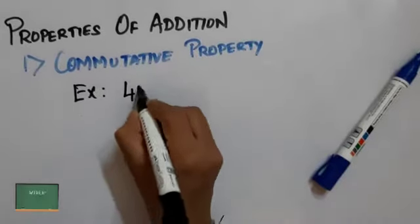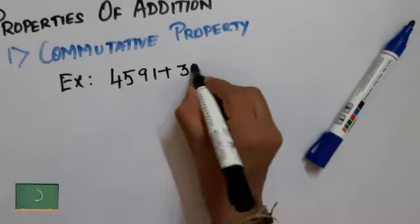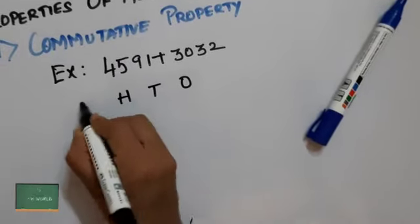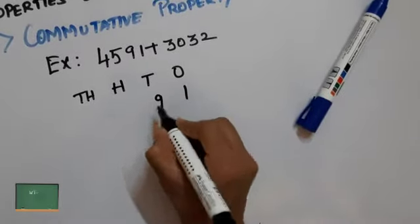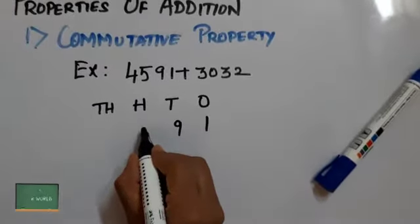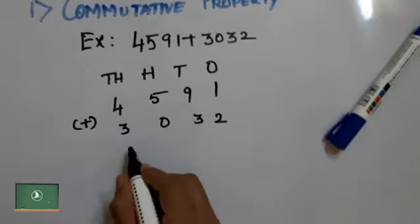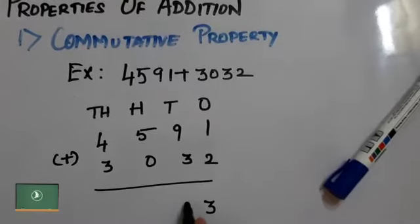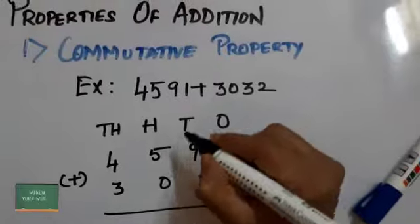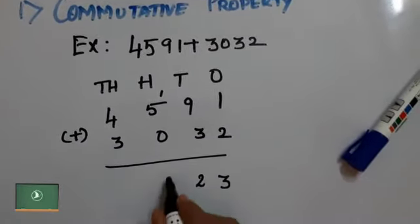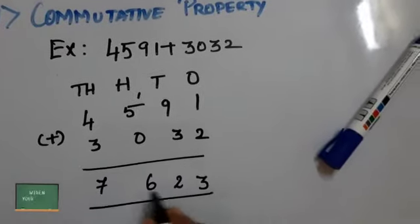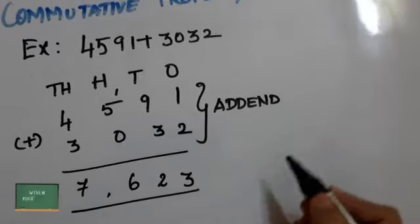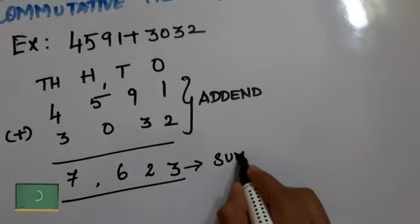Commutative property: When two numbers are added, the sum is the same regardless of the order of the addends. Here the given numbers are 4,591 plus 3,032. Before adding, we write them according to their place values. Now adding: 1 plus 2 is 3; 9 plus 3 is 12, and 1 is carried to the hundreds place; 5 plus 0 is 5, plus the carry-over gives 6; 4 plus 3 is 7. The numbers used to calculate the total are called addends, and the total is called the sum.